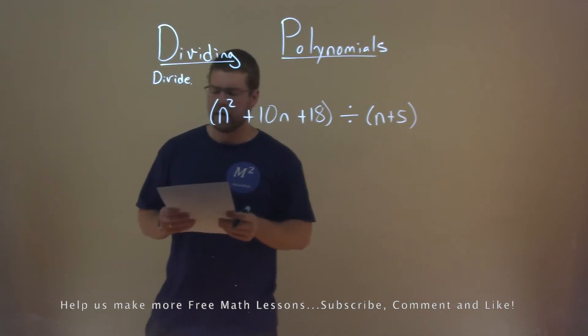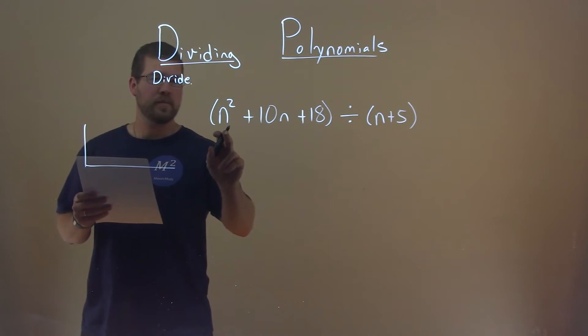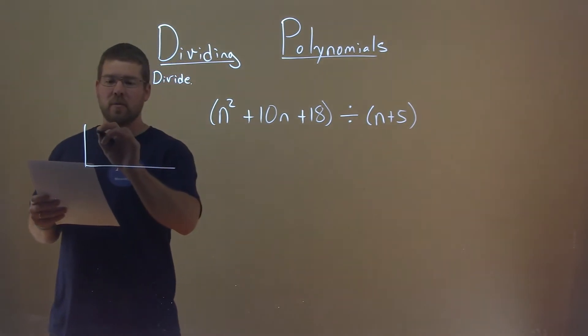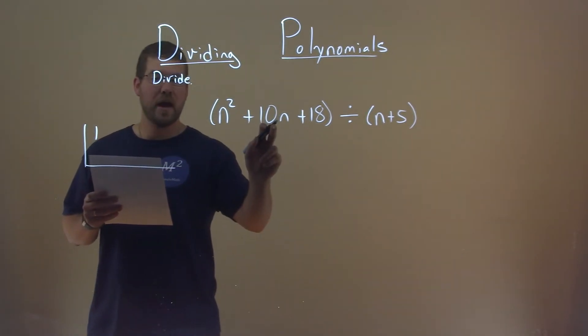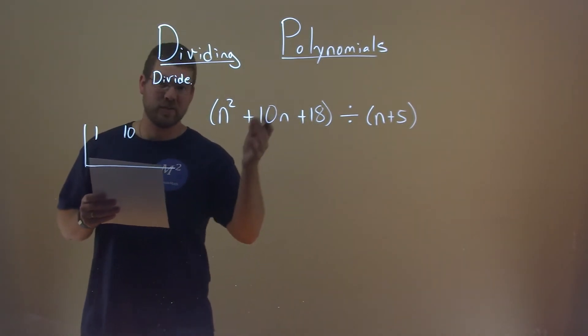Well, let's use synthetic division here. I'm going to set it up. We look at the coefficients of our first part. What's in front of the n squared is a 1. In front of the n is a 10, and in front of the 18, well, it's just the 18.